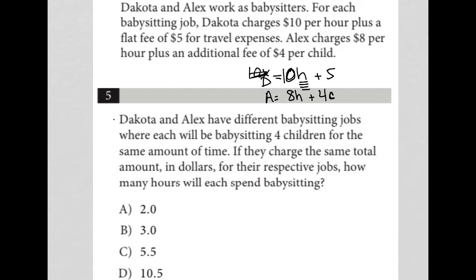Here's the actual question: Dakota and Alex have different babysitting jobs where each will be babysitting four children, so C equals 4, for the same amount of time, so H will be the same for both. If they charge the same total amount in dollars for their respective jobs, how many hours will each spend babysitting? In essence, what Dakota charges should equal what Alex charges.